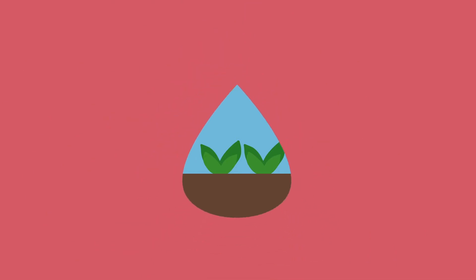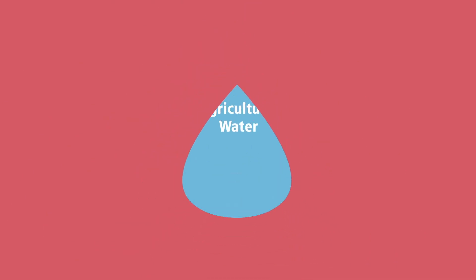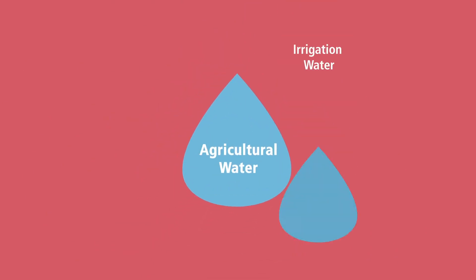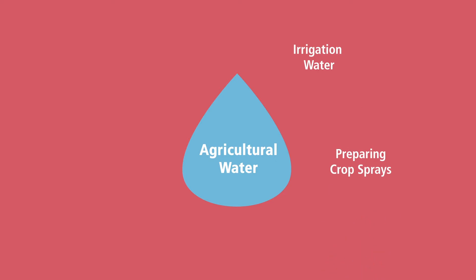Agricultural water can be used in growing or production activities, including irrigation water applied using direct water application methods, water used for preparing crop sprays, frost protection, cooling water, and water used as mixes applied directly to produce prior to harvest.